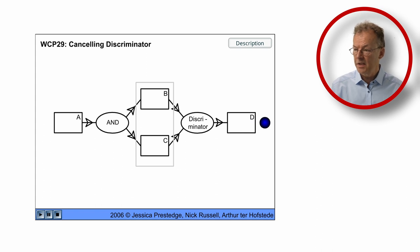In the next case we have A and then B and C are activated, and C is completed. D is executed and B has been cancelled.